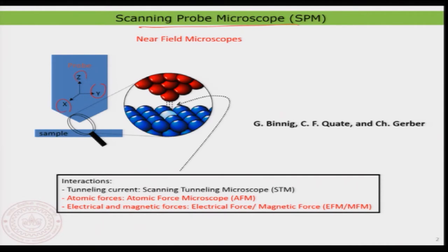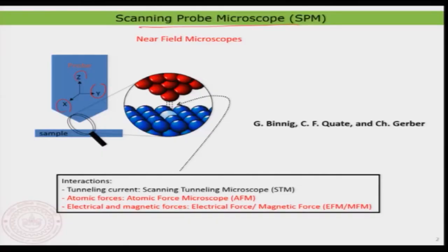You can basically move the probe and retract or approach it, so you can do a three-dimensional scanning using this tip. What we are particularly going to focus on now is the atomic forces — that is what you measure in the atomic force microscope. There are also two more special modes: electrical force and magnetic force, so you can measure electrical force on a surface or the magnetic force acting between the tip and the sample.